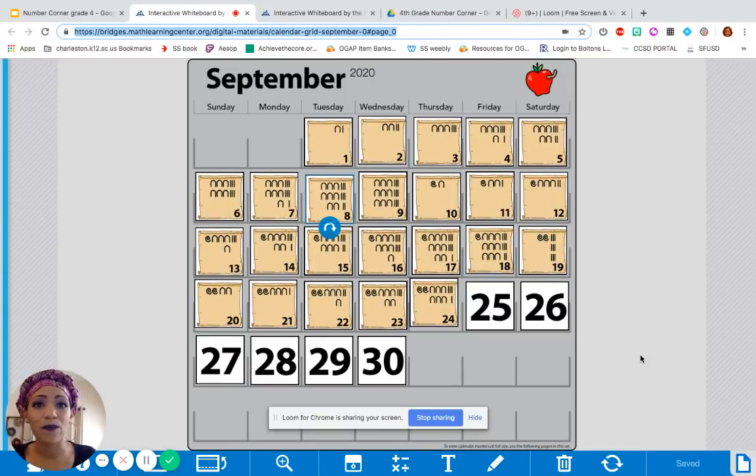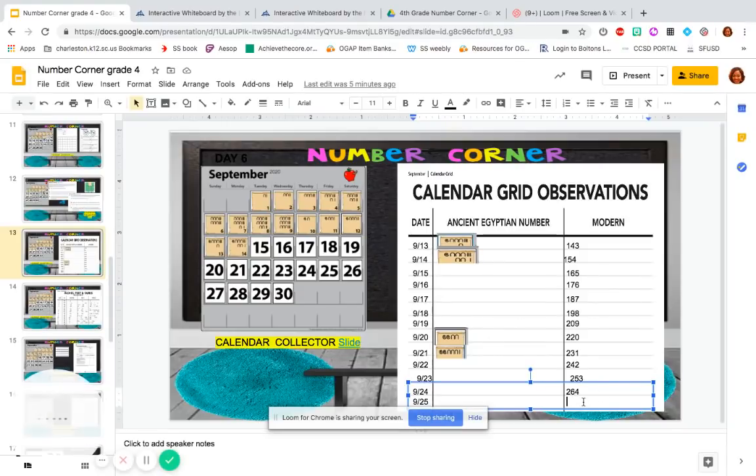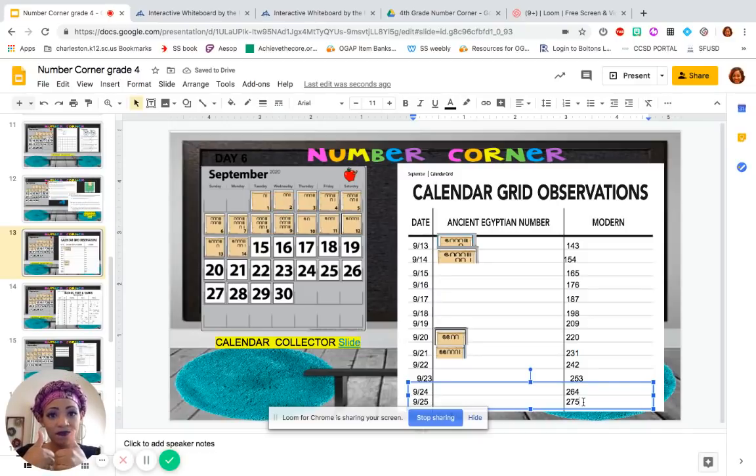Before we do that though, let's do our normal. Let's update our calendar grid. Here's our marker for today. I'm sure by now we can quickly figure out the equivalent modern number. So, what is it? Good, 275. I'm going to record that. We good? Great.